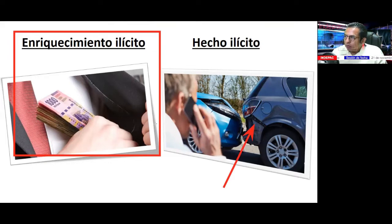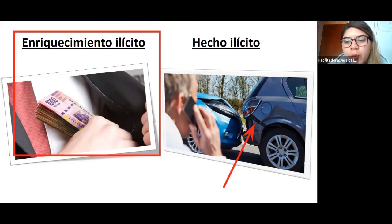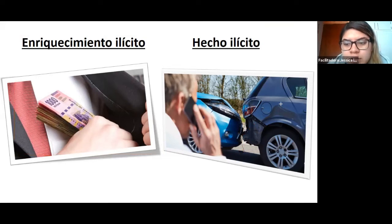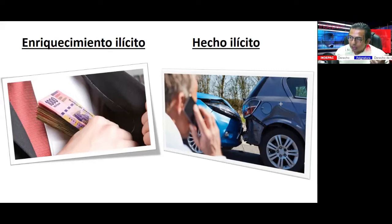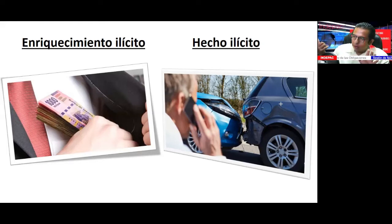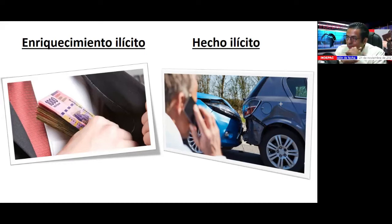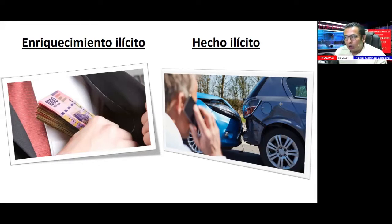Resumen gráfico de las fuentes: el contrato es el acuerdo de voluntades que crea, transfiere, modifica y extingue derechos y obligaciones. La declaración unilateral de la voluntad, por ejemplo, el testamento. La gestión de negocios: llevar la despensa a adultos mayores durante la pandemia. El enriquecimiento ilícito: recibir dinero que no corresponde o, como servidor público, ganar 50 mil pesos pero tener gastos y propiedades que no puede justificar. El hecho ilícito: un accidente de tránsito que produce daño a la propiedad ajena, aunque no haya intención.